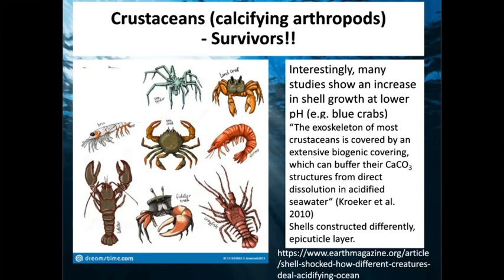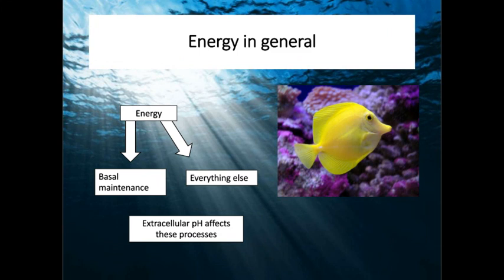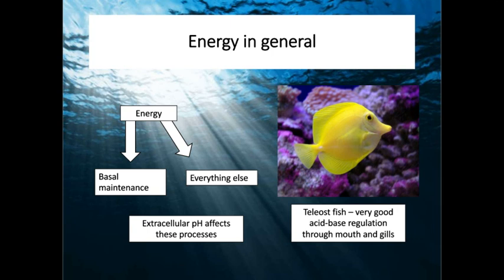Some tissues in certain organisms may be more tolerant to pH change than others. For gelatinous animals, there really isn't much known yet. Regarding energy allocation: extracellular pH affects basal maintenance and other processes. For organisms with high metabolism and high respiration rates, oxygen binding is more sensitive to pH changes. Teleost fish are very good acid-base regulators because they can excrete hydrogen ions from their bodies.